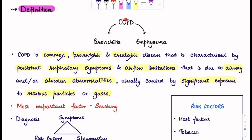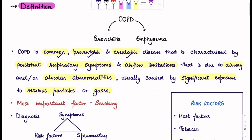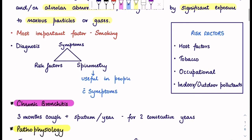COPD also has a mix of both sometimes. It can be majorly bronchitis and minorly emphysema or vice versa. The most important factor in COPD is smoking, so the history of smoking plays a very important role. The diagnosis of COPD depends on three important things: the symptoms, the risk factors — the major one being smoking — and spirometry. It is useful in people with symptoms. Talking about risk factors, you have host factors, tobacco, occupational, indoor and outdoor pollutants.